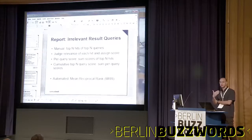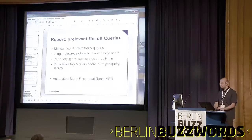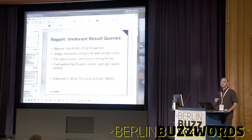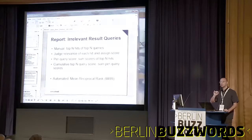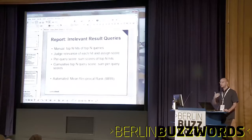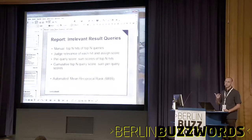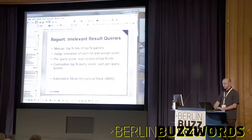MRR — Mean Reciprocal Rank — is something that can be done automatically to avoid all the manual work. You keep track of where people click: the first result, second, fifth, tenth — and assign different scores depending on where they click. The further from the top they click, the lower the score. You can compute that automatically and track it over time.